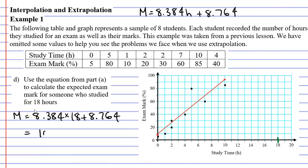So we get a mark of 160%. And we can see that that's a problem because you can't get a mark more than 100%. Now why did that happen?